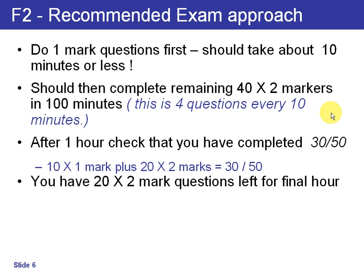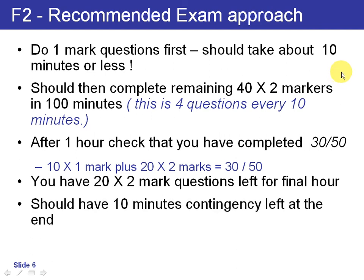In the last hour, you need to complete 22 two-mark questions. When completed, you should be left with about a 10-minute contingency at the end. This allows you to go back over any questions you moved on from or had doubts about. Your approach should be to put in a provisional answer, note it, then use the contingency to come back, review, and change it if required.